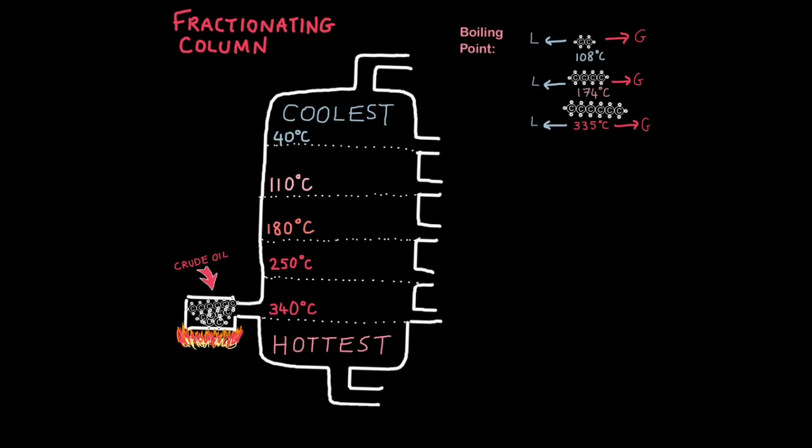So how does this work? For fractional distillation to work we need a device called a fractionating column. These are huge towers which are heated in a way to create a temperature gradient. In other words it's hotter at the bottom and cooler at the top. This is what makes it possible to separate things according to their boiling point. So remember boiling point is the temperature at which molecules become gases from liquids. So liquid to gas. So in this example we're going to be looking at three types of molecule.